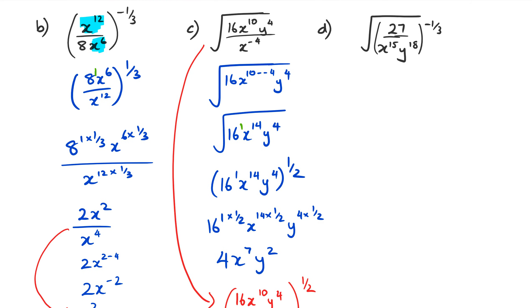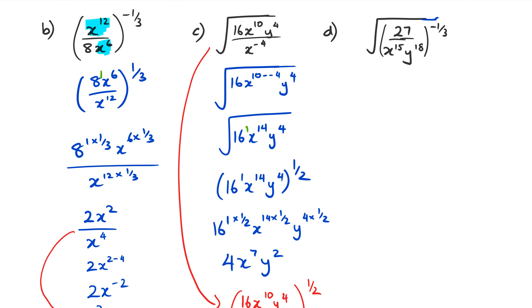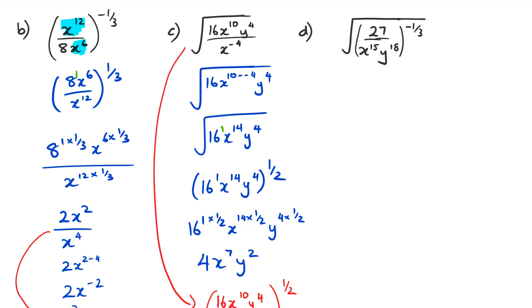Finally, we have question D. I just want to extend this a bit. In question D, the square root symbol actually extends all the way. The first thing I'm going to do is get rid of the negative one-third. To do that, I'm going to flip that fraction inside out, and I'm going to get x to the power of 15, y to the power of 18, divided by 27, and that's now raised to the power of a positive third.